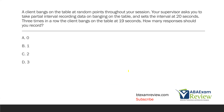A client bangs on the table at random points throughout your session. Your supervisor asks you to take partial interval recording data on banging on the table and sets the interval at 20 seconds. Three times in a row, the client bangs on the table at 19 seconds. How many responses should you record?